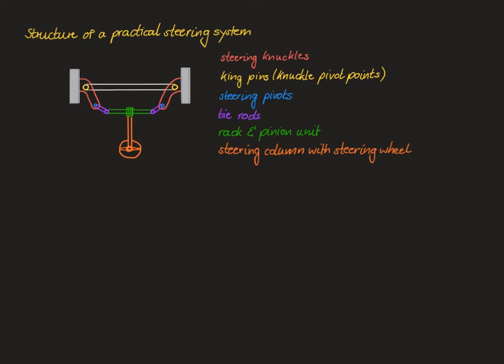As a final remark, this is of course only a rough structure of a prototypical steering system. In practice, there are of course many more different variations of steering systems and also a lot of more detailed parts and additional features such as power steering and so on. For the purposes of this course on the fundamentals of vehicle dynamics and control, however, it's sufficient to have a basic idea of the structure of a practical steering system.